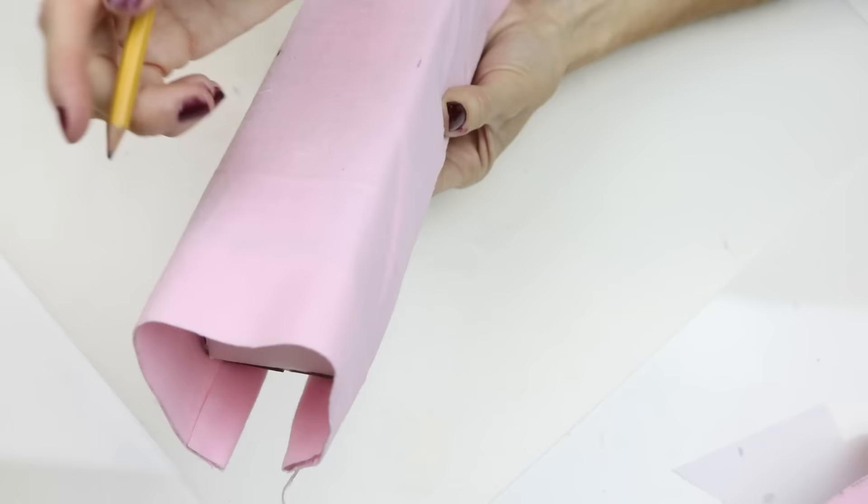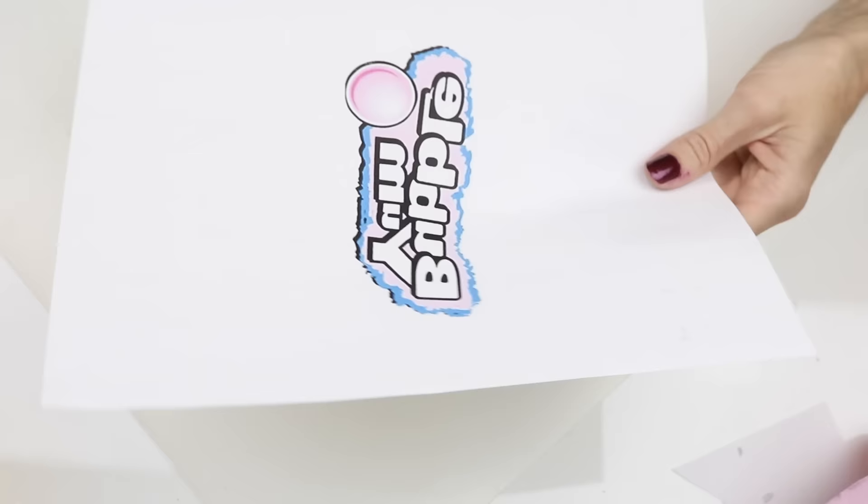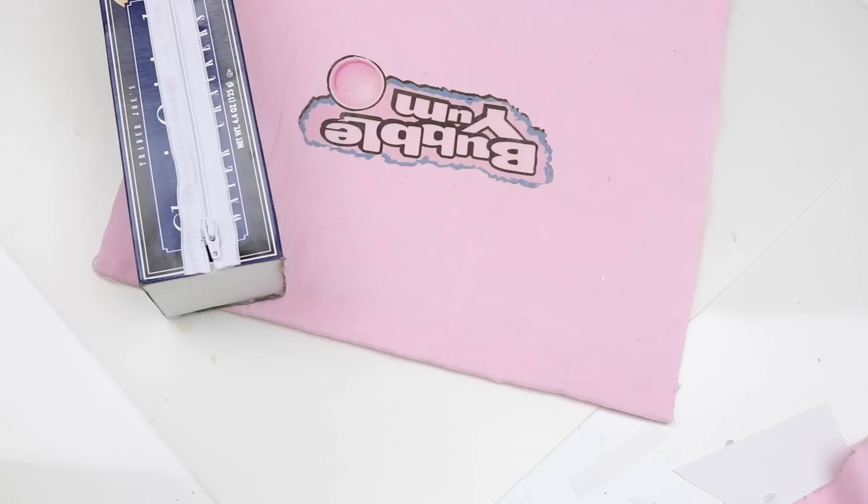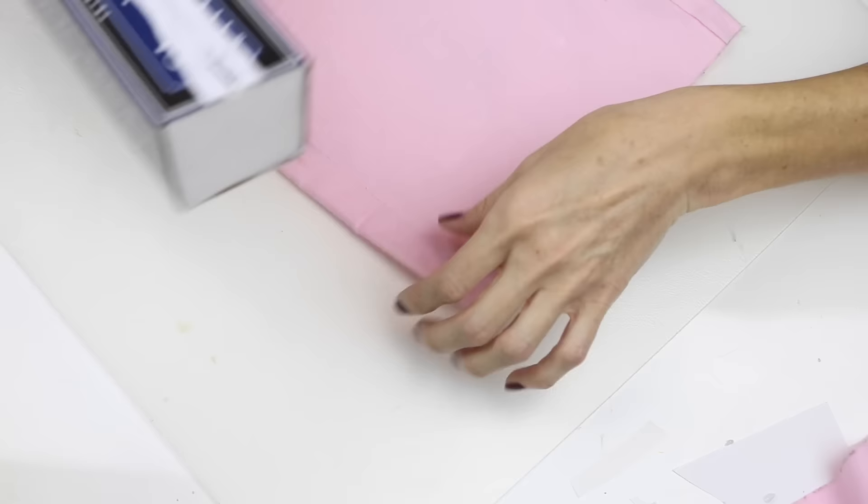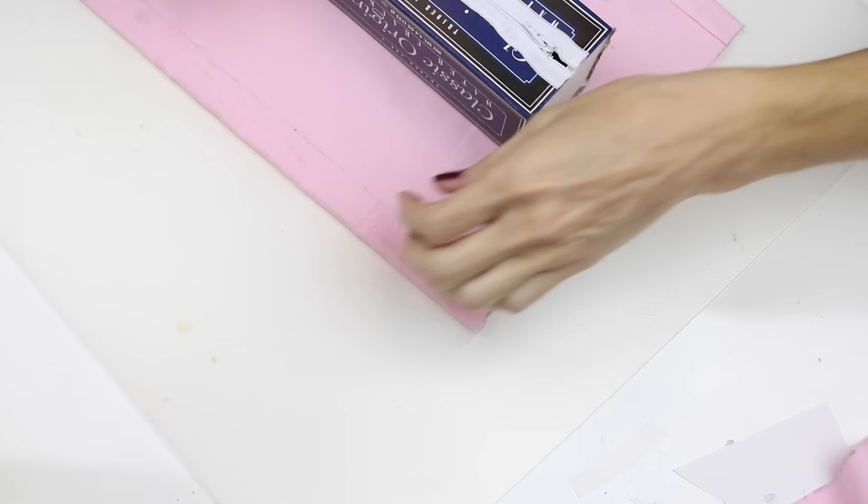The next step is to mark off the edges of the box. Then I took this inkjet transfer paper. I printed out my image onto that. Make sure you use the mirror image setting. I pressed it onto the fabric according to the instructions. Then I placed my box so it was in the center, made sure that the fabric fit around and the logo was in the center.